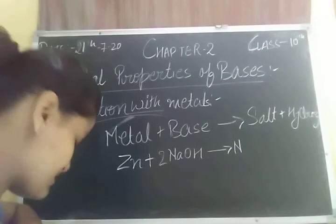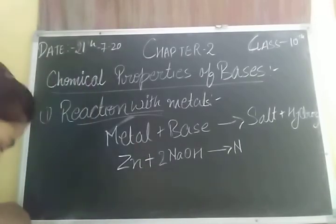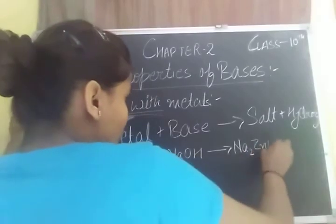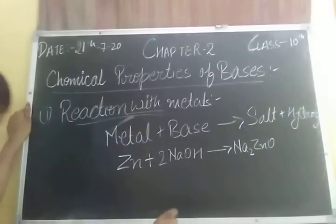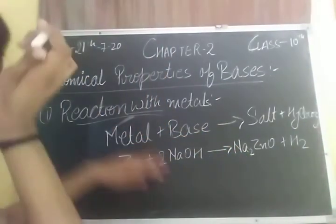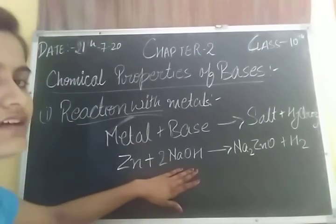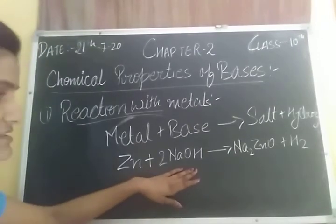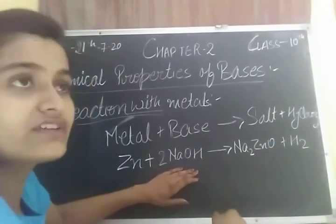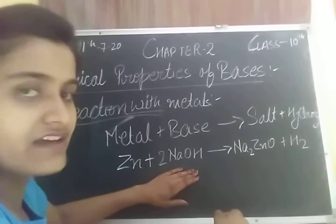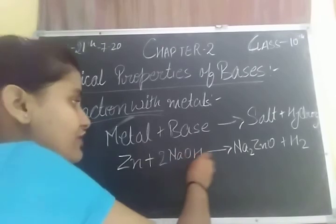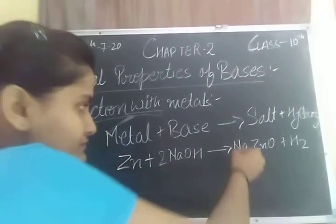Now we can see the symbolic reaction: Zn + 2NaOH → Na₂ZnO₂ (sodium zincate) + H₂ gas. Zinc reacts with the base NaOH. Bases produce OH⁻ ions — NaOH is a base because it produces OH⁻ ions in solution.